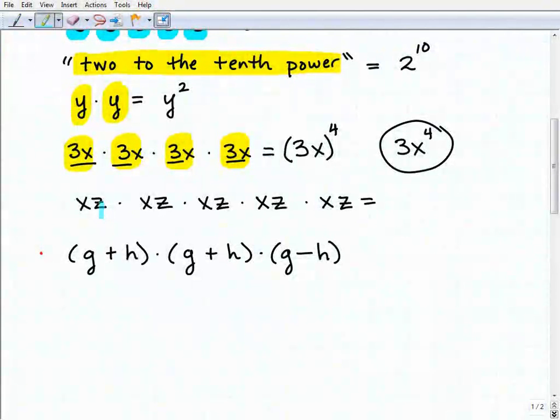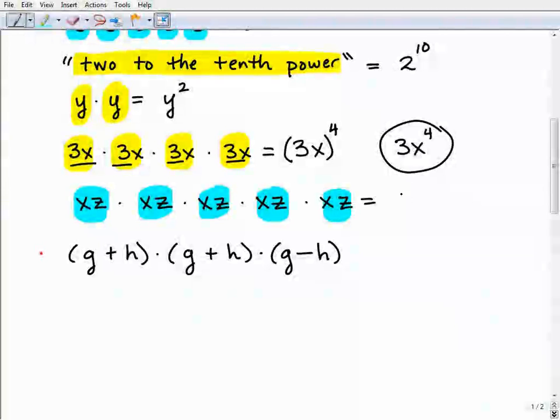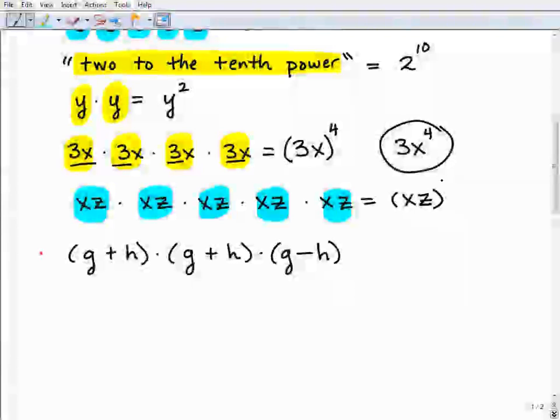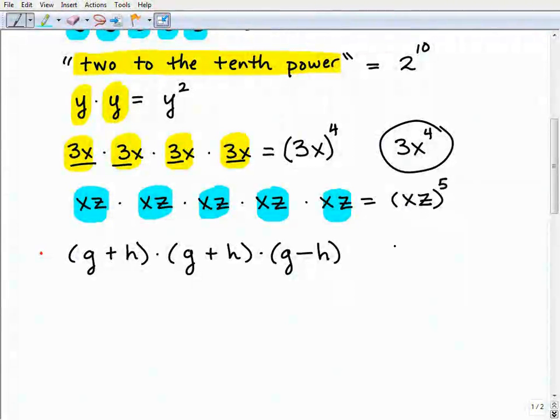Okay, next problem. So we have XZ, that's the way we would say that, being multiplied by itself, 1, 2, 3, 4, 5 times. So in this case, XZ to the 5th power, XZ to the 5th. That's how we would write that. So we want to go ahead and use those parentheses.